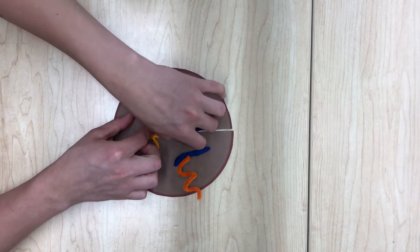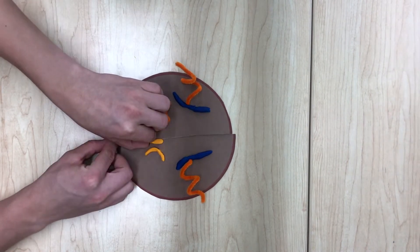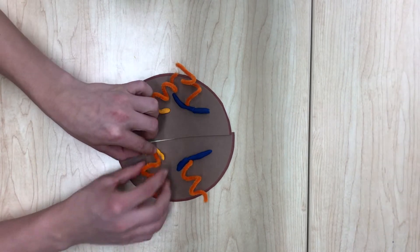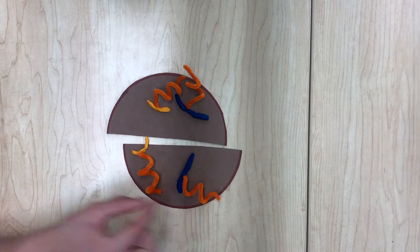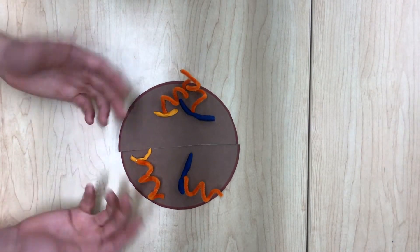In anaphase the spindle fibers attached to the sister chromatids and begin to pull them to the poles of the cells. This does not always happen however. In an anaphase lag this will happen slowly or in some cases not at all.